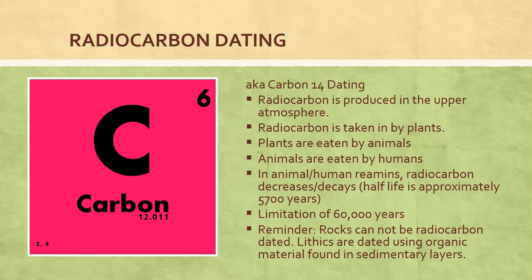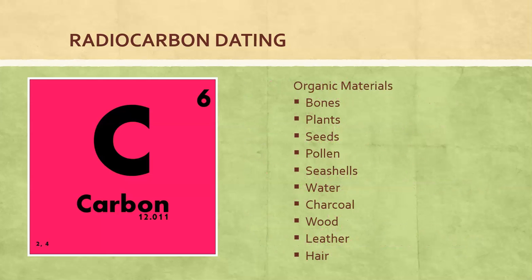As mentioned earlier, there is a limitation of 60,000 years for radiocarbon dating, and it's important to note that rocks cannot be radiocarbon dated — lithics are dated using organic material found in the sedimentary layers. Organic materials that can be radiocarbon dated include bones, plants, seeds, pollen, seashells, water, charcoal, wood, leather, and hair. Charcoal was a very common material used for radiocarbon dating.